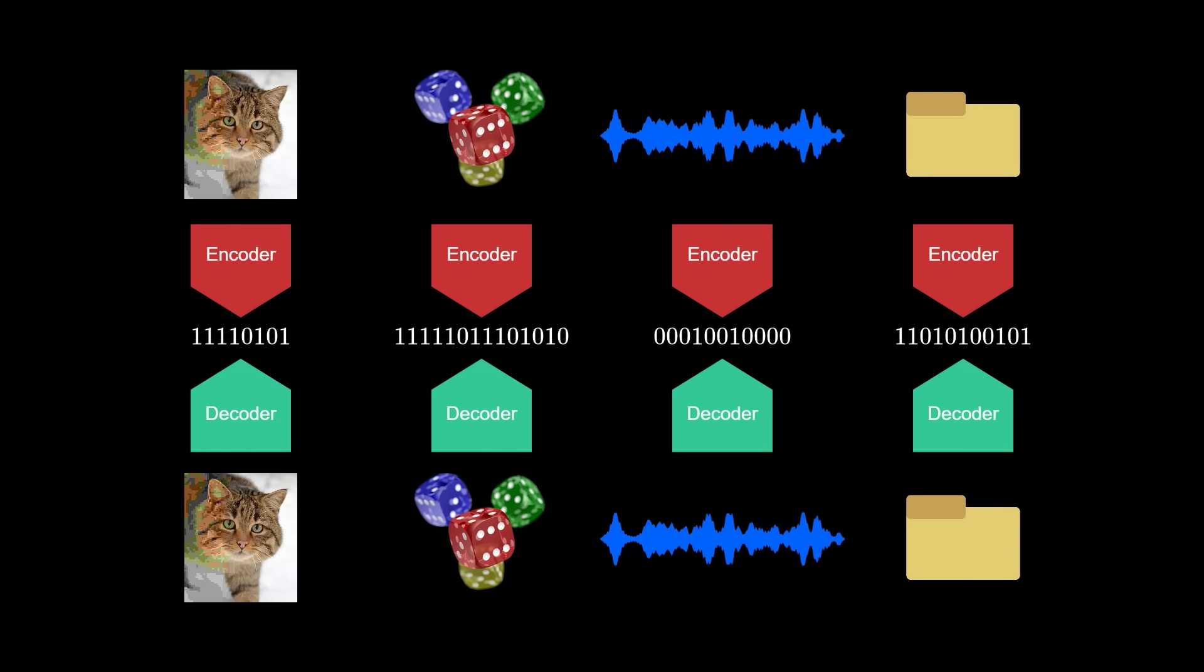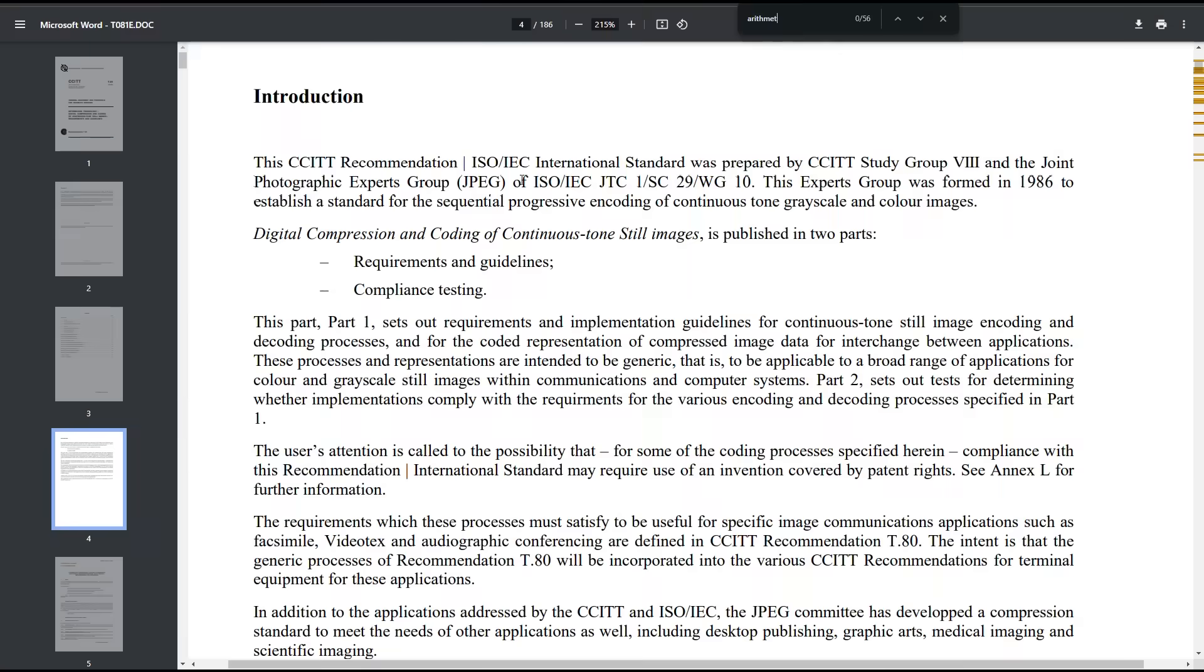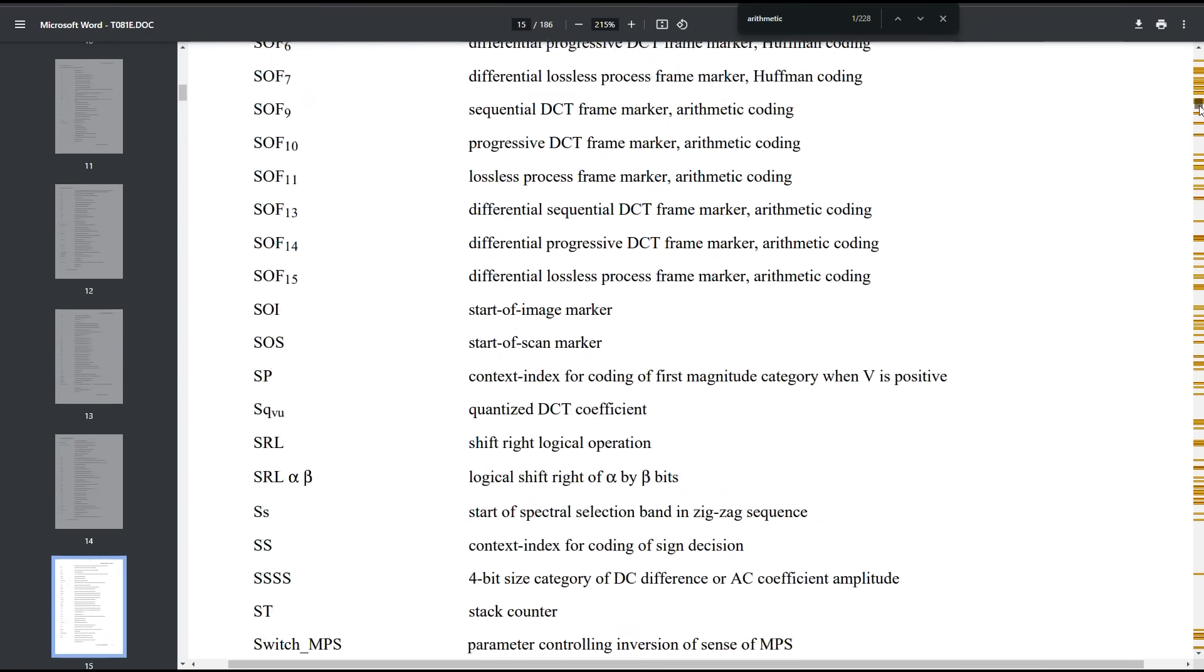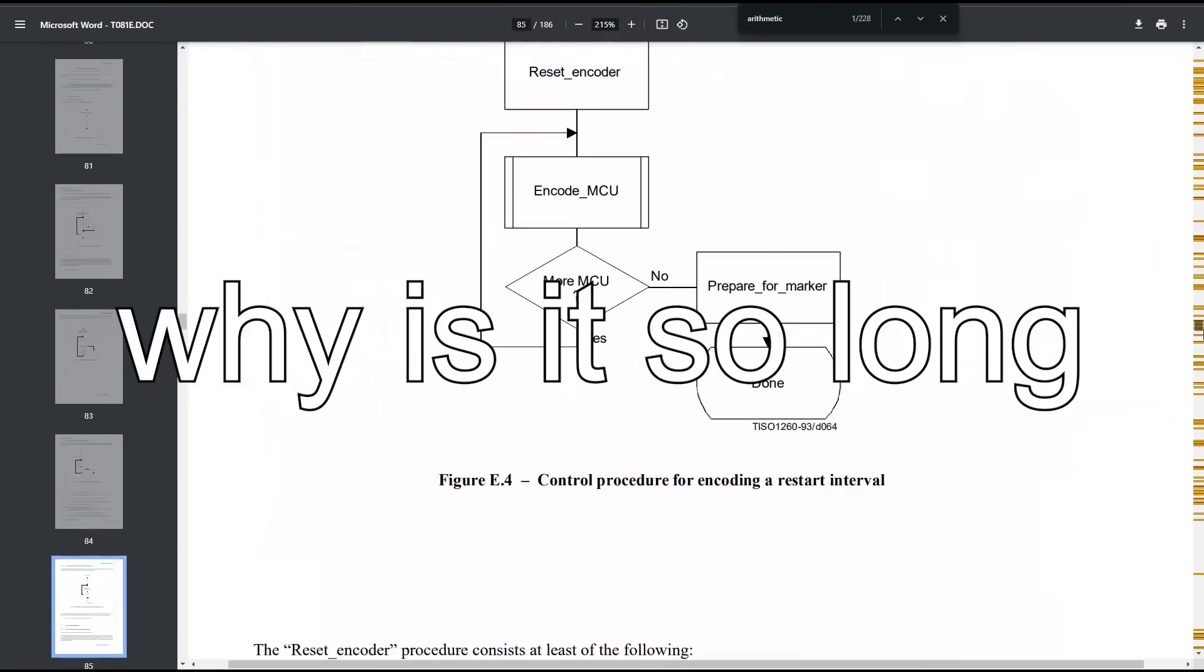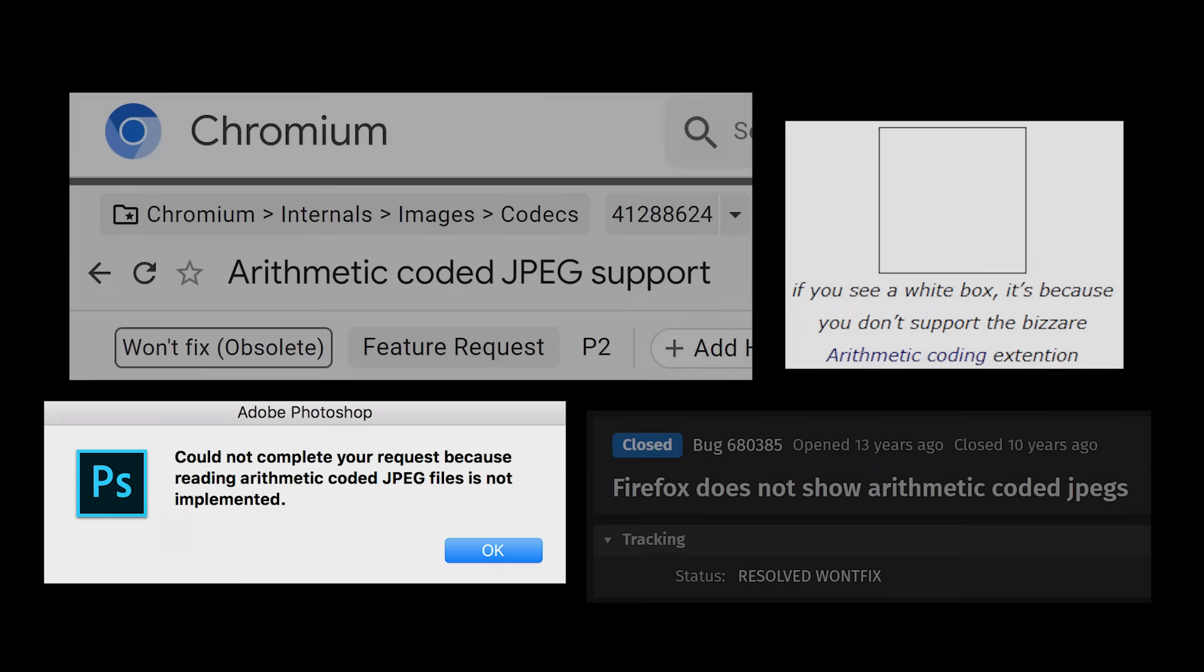But even though Huffman coding is so ubiquitous, we've known a better algorithm since the 70s: arithmetic coding, which uses arithmetic to turn data into a single number. The JPEG specification actually supports arithmetic coding, but if you try to open an arithmetic coded JPEG, depending on the application, you might get an error.